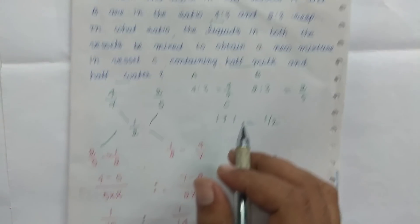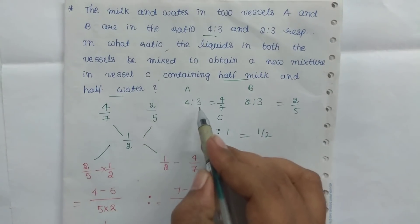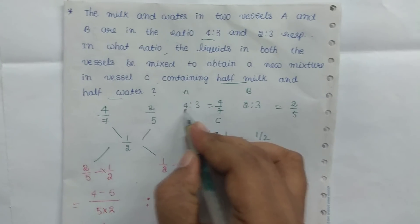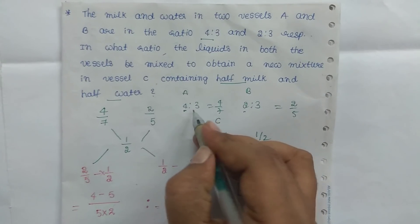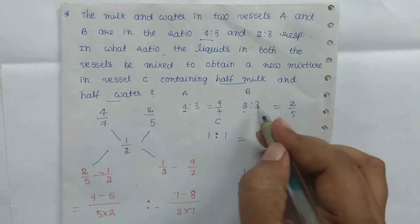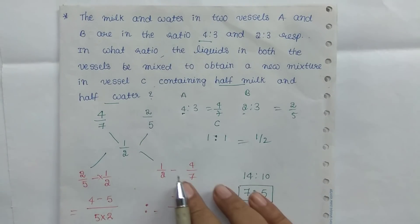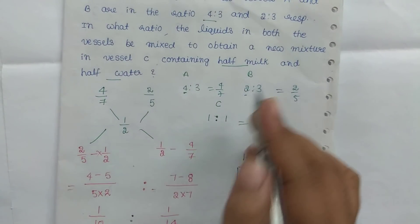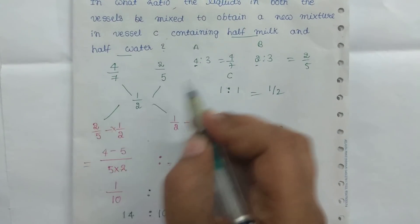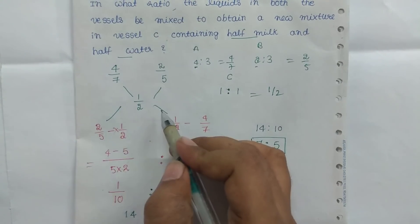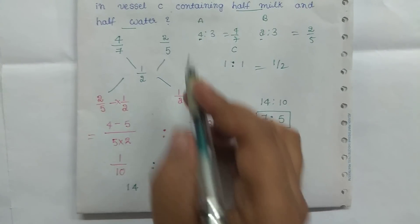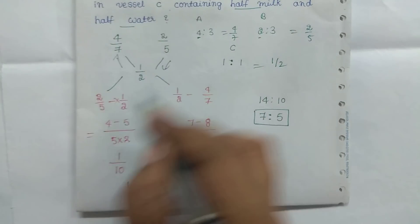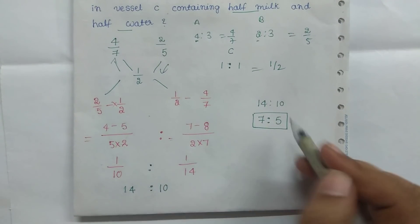Clear — the path is 3 milk and water: 3/7, 3/5, 1/2. This is the answer. The milk mixture and allegation is simple to do.